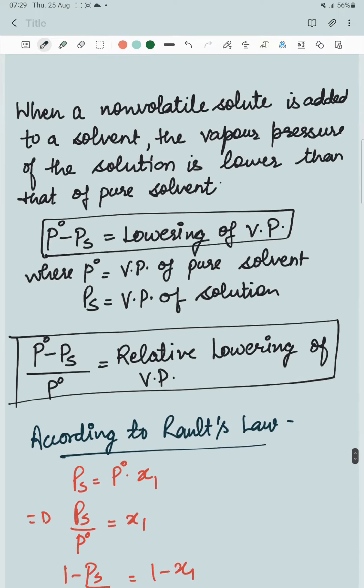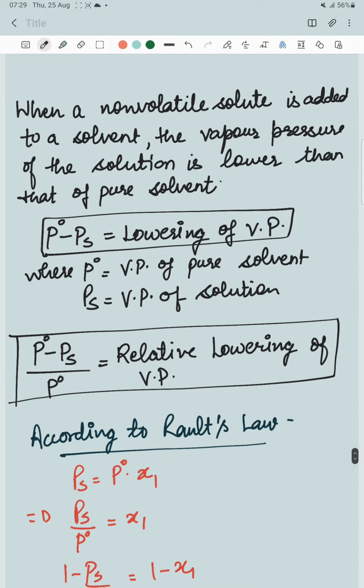So what is this? When a non-volatile solute is added to a solvent, the vapor pressure of the solution is lower than that of the pure solvent. By adding non-volatile solute, vapor pressure becomes lower than the pure solvent.